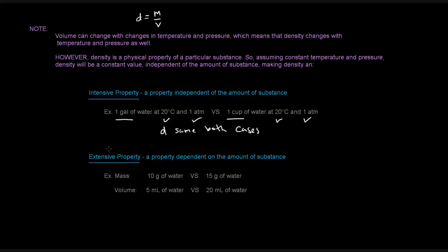Because density as a property is not dependent on the amount of substance, it's called an intensive property. The opposite is an extensive property — a property that is dependent upon the amount of substance. Mass and volume are each extensive properties: 10 grams of water is different from 15 grams of water, and 5 milliliters is different from 20 milliliters. But when mass and volume come together in the density formula, they create density, which is an intensive property.